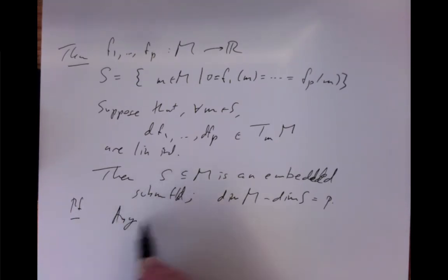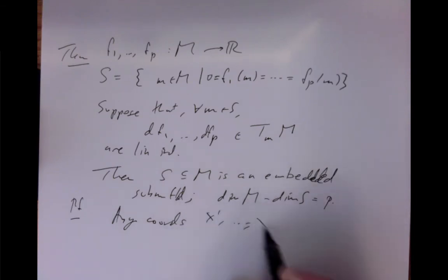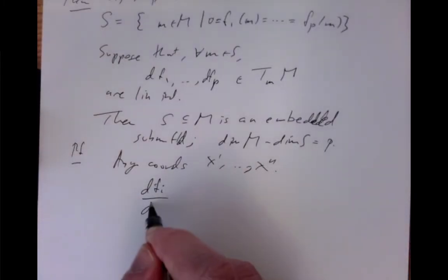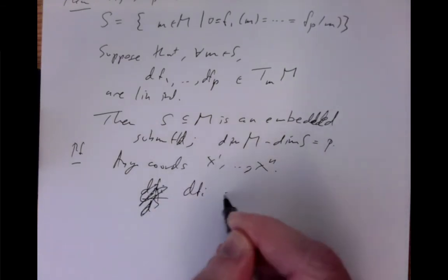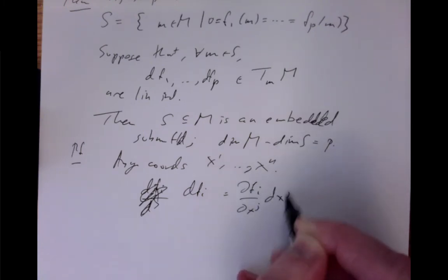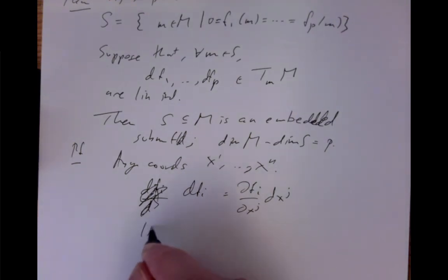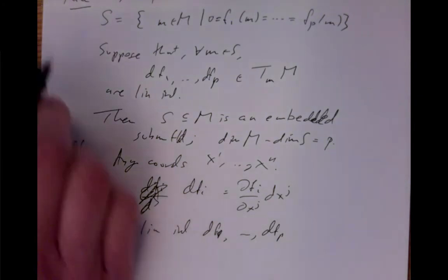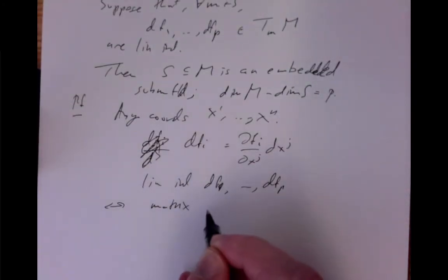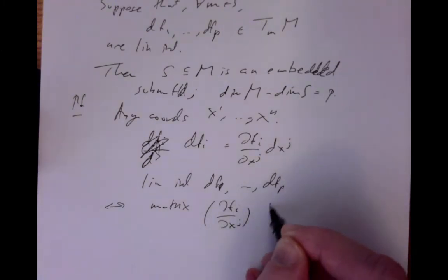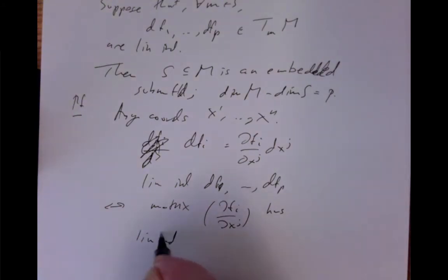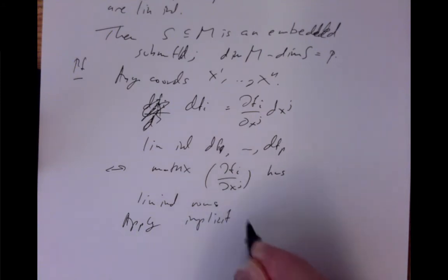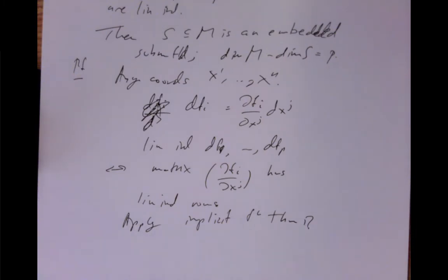We simply take any coordinates locally — coordinates x1, ..., xn on our manifold. In those coordinates, we have an expression for the differential of each function: dfi = (∂fi/∂xj) dxj. Linear independence of the dfi's is exactly the same as saying the matrix of ∂fi/∂xj has linearly independent rows. So we can apply the usual implicit function theorem. It's really an elementary observation more than a theorem.